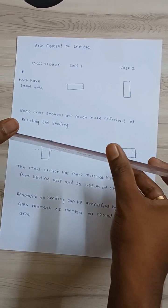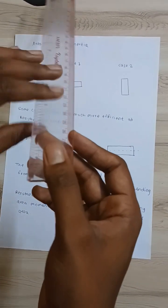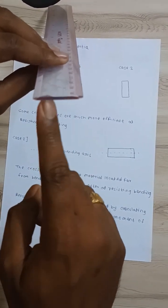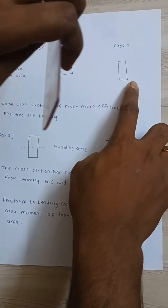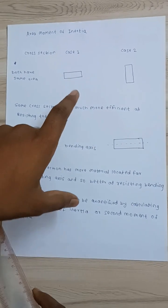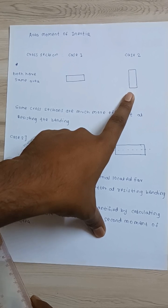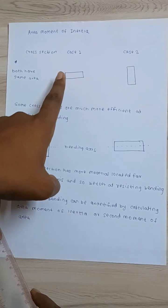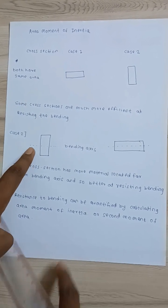If you draw the cross-sectional area—that is, this area when it is horizontal and when it is vertical—you can clearly observe in case 2 it offers much more resistance to bending as compared to case 1. The reason behind this is if you draw the bending axis...